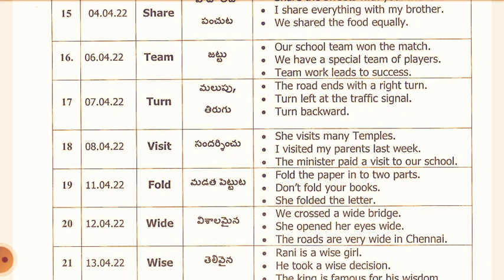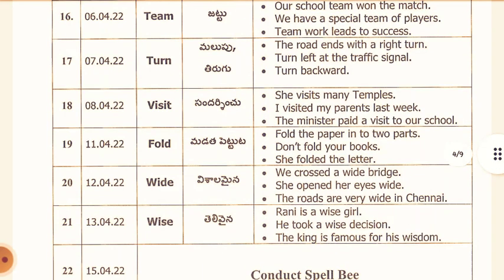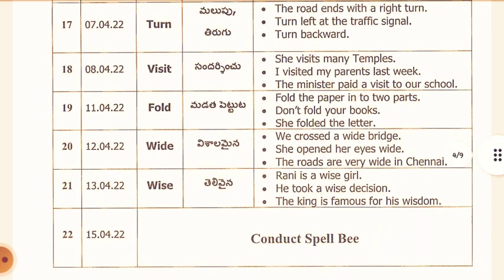12th April: Wide. Telugu meaning: Visala Maina. We crossed a wide bridge. She opened her eyes wide. The roads are very wide in Chennai. 13th April: Wise. Telugu meaning: Telivaina. Rani is a wise girl. He took a wise decision. The king is famous for his wisdom. On 15th April, we should conduct a Spell B test.